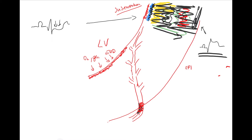So remember: if ischemia and necrosis affect the endocardium, there will be depression. When it spreads through the whole myocardial wall and especially the epicardium, there will be elevation. And the explanation for Prinzmetal's angina follows from this.